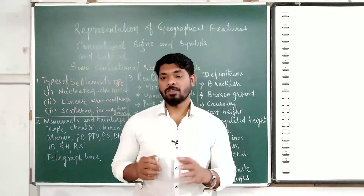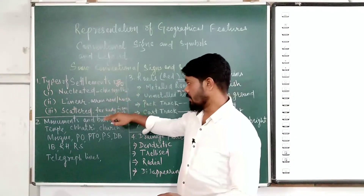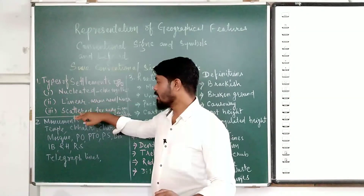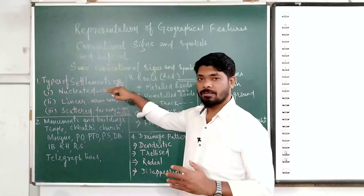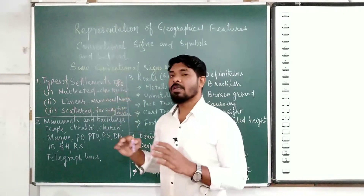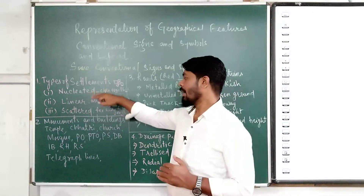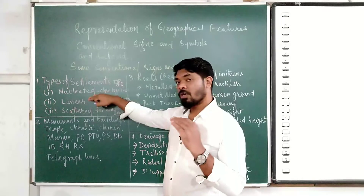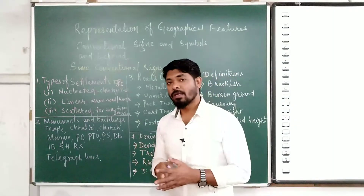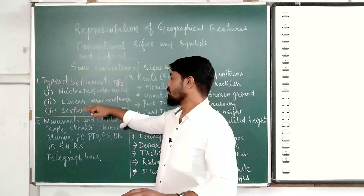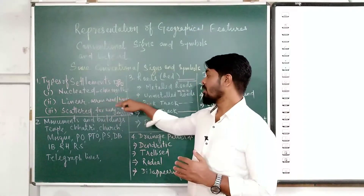Let us see the symbols we need to learn. The first one is types of settlements. There are three types: nucleated, linear, and scattered. Settlements are shown on the topographical map with red boxes. The red boxes represent a town, village, or city where people are settled. If the red boxes are close together, the pattern is called a nucleated pattern.